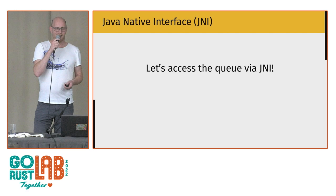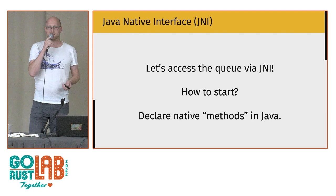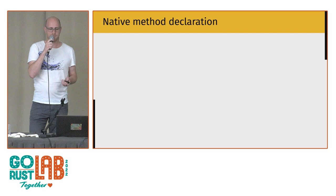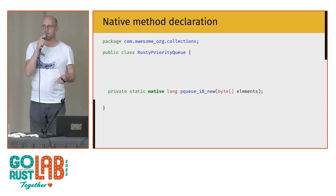Why is it interesting to use Rust with Java? You can have the advantages of the managed world combined with the performance and power of the native world, or access low-level device drivers or APIs like OpenGL or Vulkan. It's also useful for integrating with existing applications where it's not feasible to rewrite everything in Rust. In Java, we use the Java Native Interface (JNI) to access the priority queue.